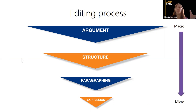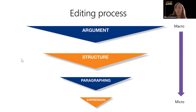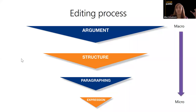The editing process is: argument first, then structure, then paragraphing, then expression. You don't want to go straight to expression — asking 'how are my sentences, my word choice, my vocab?' — because if you realize you need to change your argument, refine it, or express it more sophisticatedly, that's going to alter your structure, which alters your paragraphing, so some of that expression work won't matter. You have to work at the higher level first — macro leading down to micro.